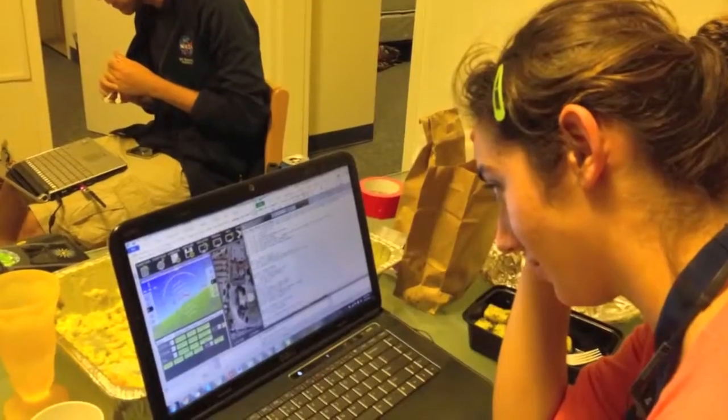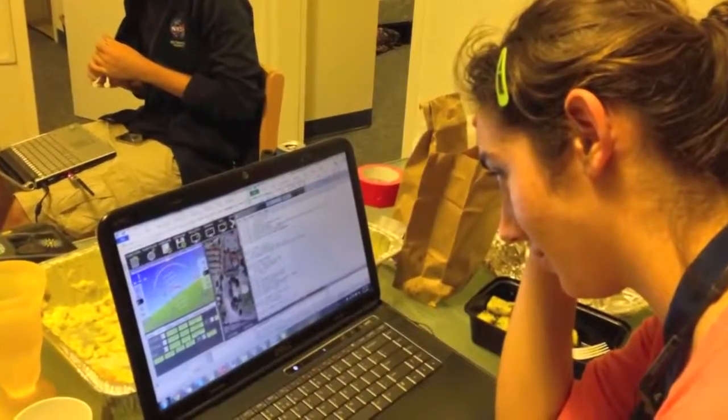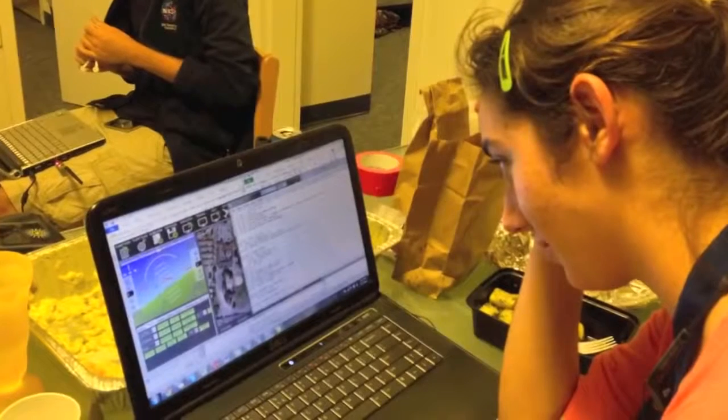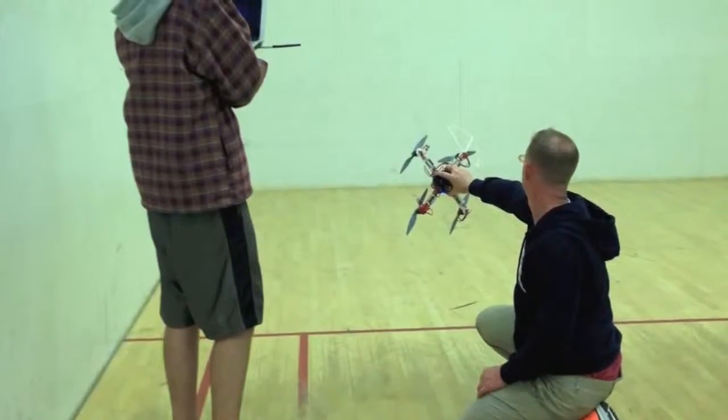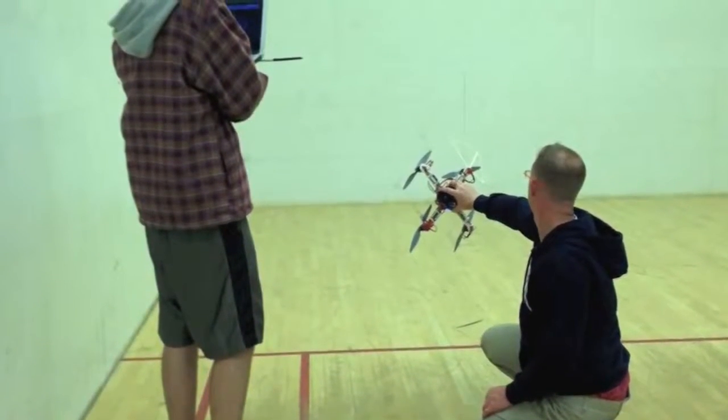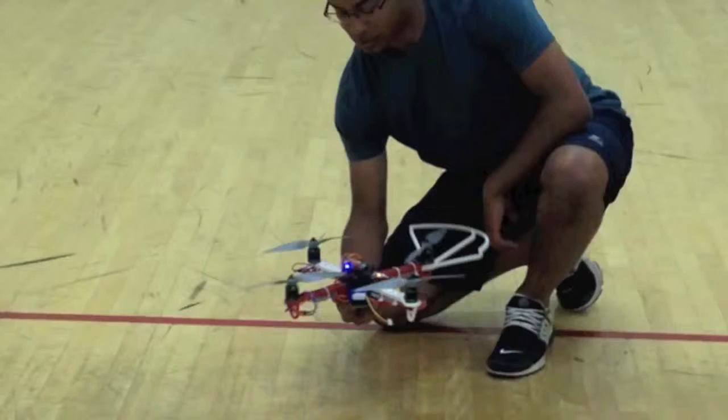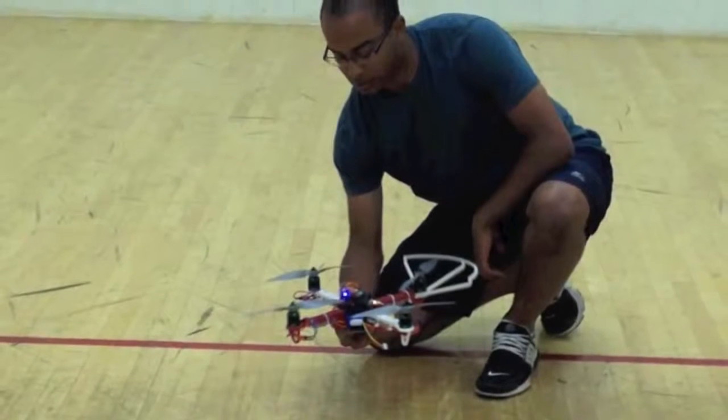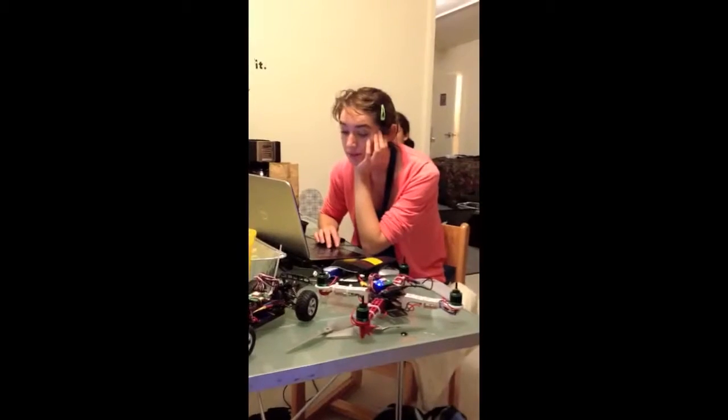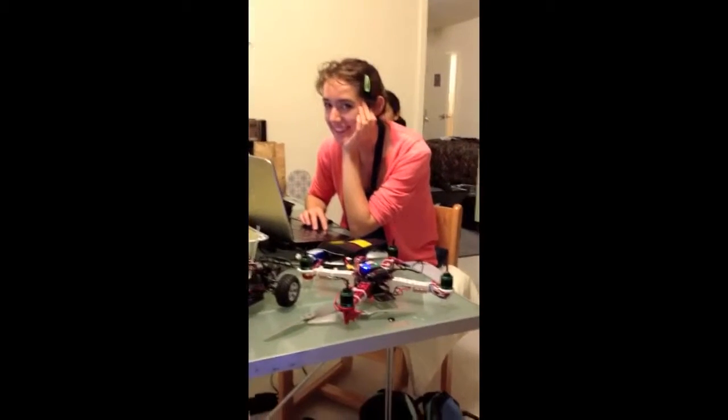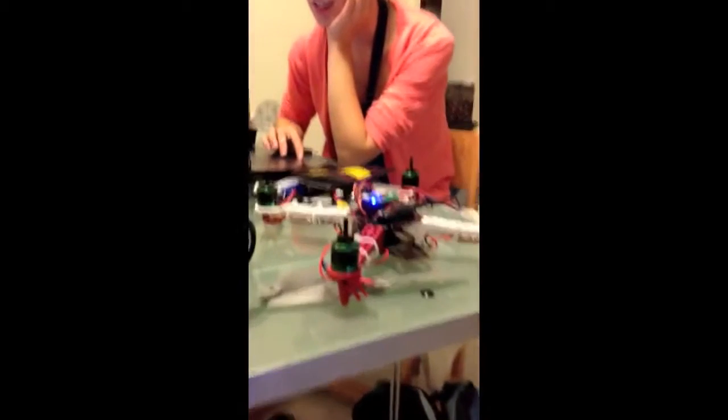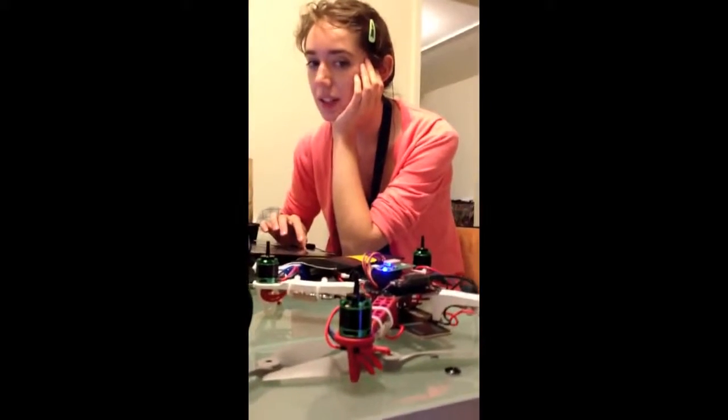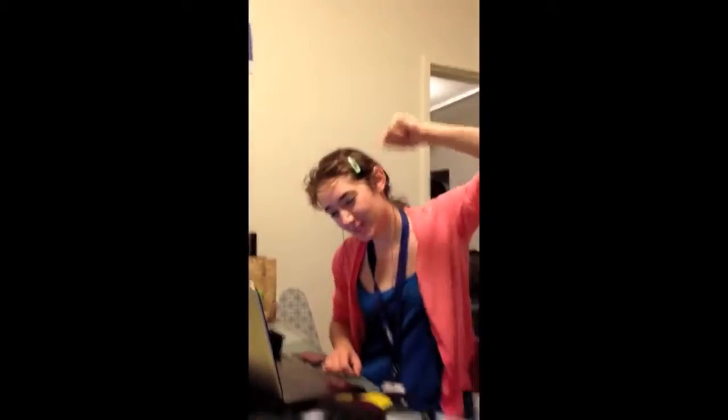Next, we began using Mission Planner and Q Ground Control to prepare the vehicle for autonomous flight. Alan and Andrew T. calibrated the onboard accelerometers by holding the quadcopter in various positions to tell the onboard accelerometers which direction was up or down. Alia, Andrew C., Christina, and Alan used Q Ground Control to make first communication with the quadcopters for our first programmed flight.